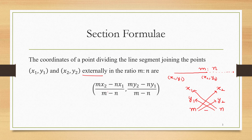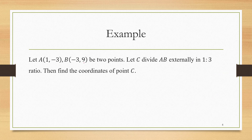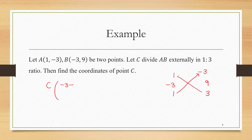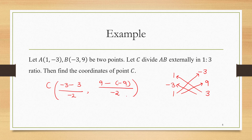Let's do an example. A is (1,-3), B is (-3,9), and C is dividing it externally in the ratio 1:3. We have to find the coordinates of point C. Writing coordinates of A and B vertically and the ratio horizontally, C = (1×(-3) - 3×1)/(1-3), (1×9 - 3×(-3))/(1-3) = (-6)/(-2), 18/(-2) = (3, -9). So coordinates of C are (3,-9).